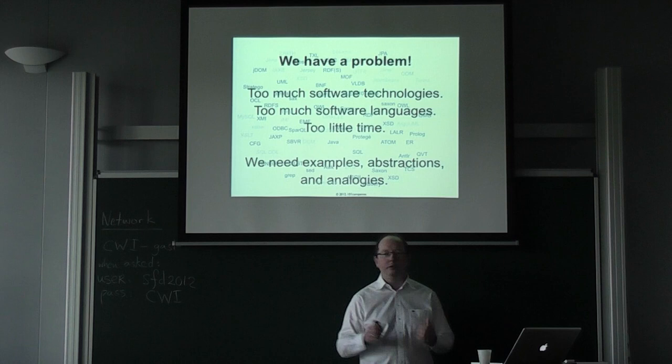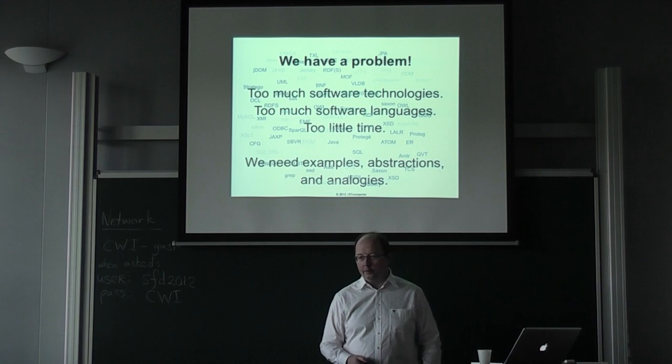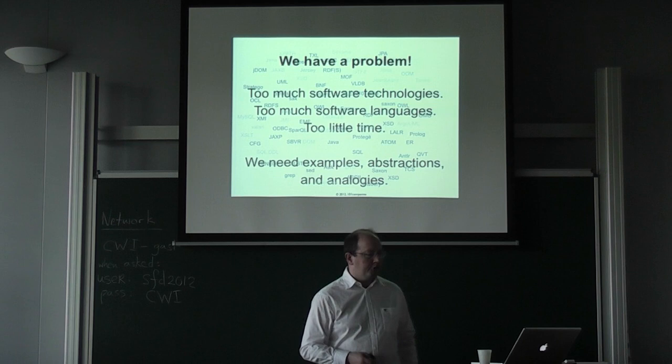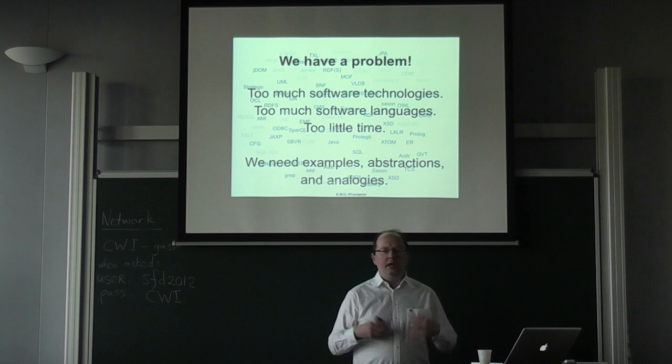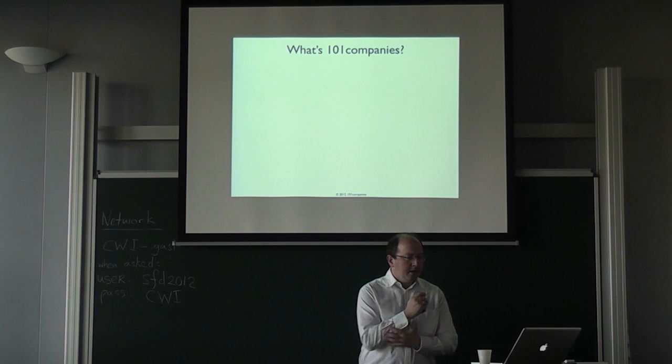If you do a degree in computer science — a bachelor or master degree — you should know about some of this stuff, but it's sort of too much. How can you possibly know about all these programming languages, all these modern programming technologies? With this project, we try to systematically provide examples for these technologies, provide abstraction, use lightweight ontologies, classification schemes, and wikis. We also try to connect things and provide analogies.